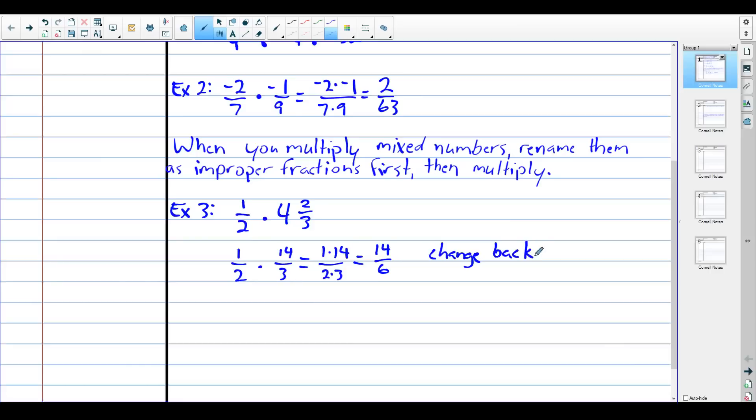Or we can change back to a mixed number. We have to change it back at some point anyway. We divide this out, so fourteen on top, six on the bottom, which gives us two as our whole number with two left over. So fourteen over six equals two and two sixths. And then we just simplified. Now we've run out of chances, we have to simplify. So two sixths is one third. This becomes two and one third.